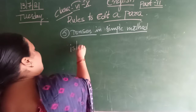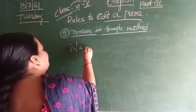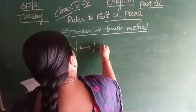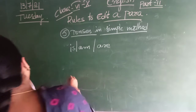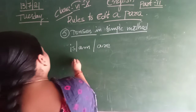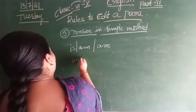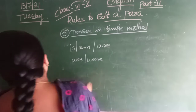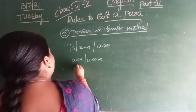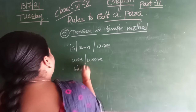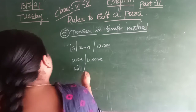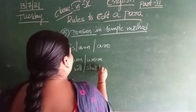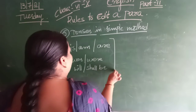Is, am, are — these are for present tense. Was, were — these are for past tense. Will, shall be — these are for future tense.